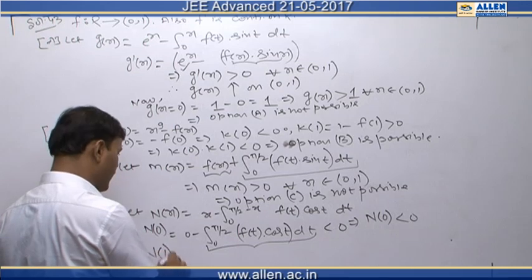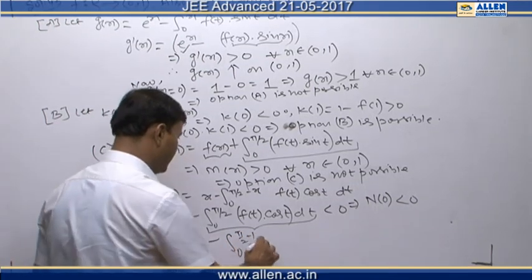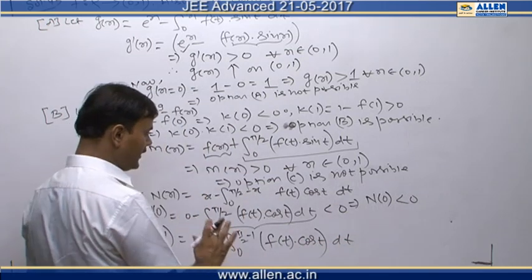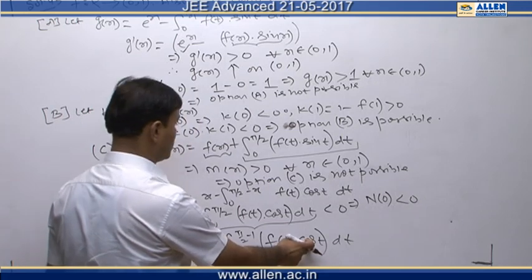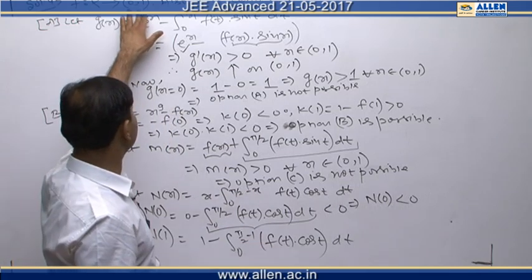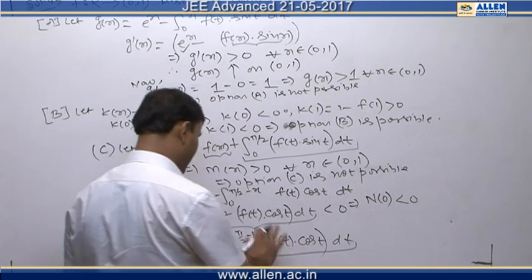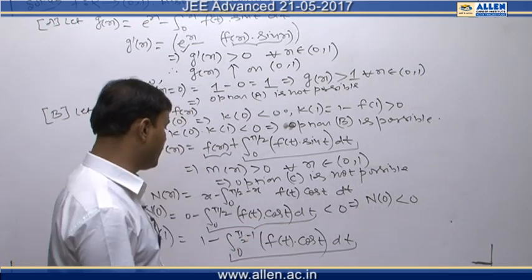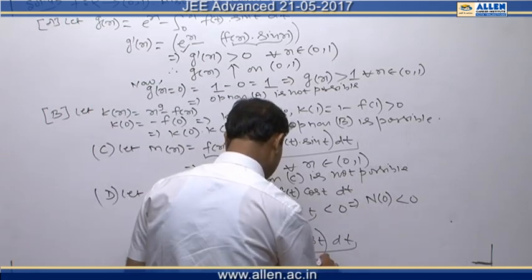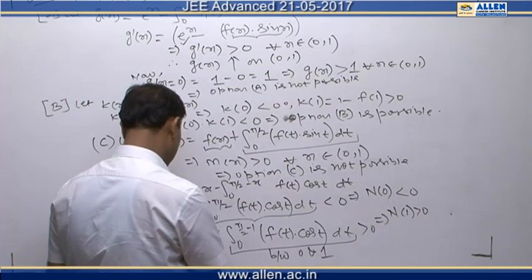At x = 1, we get n(1) = 1 minus the integral from 0 to (π/2 − 1) of f(t)·cos(t) dt. Over this interval cos(t) remains between 0 and 1, and f(t) takes values in (0,1), so the definite integral is some positive constant between 0 and 1. Therefore 1 minus that constant is positive, so n(1) is positive. Since n(0) < 0 and n(1) > 0, by the intermediate value theorem option D is correct.